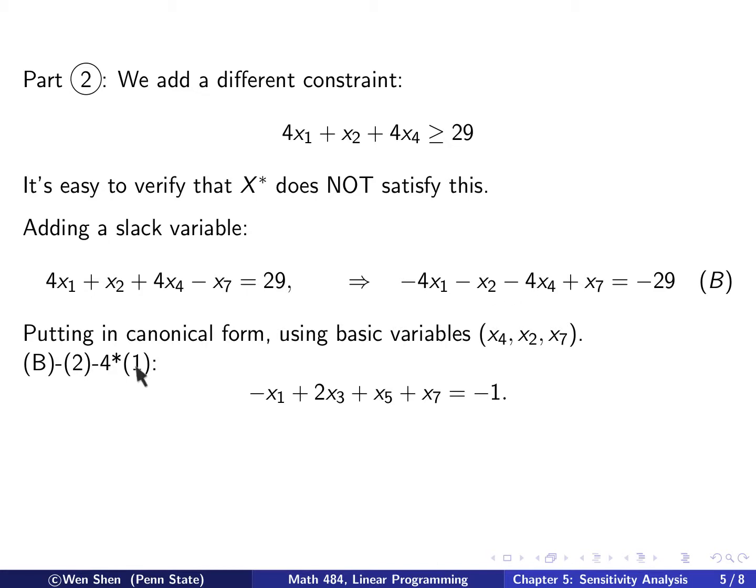I can take the second constraint, multiply by negative 1, add on top of B. And I take the first equation, multiply by negative 4, add on top of B. And then I get this one. So you can verify my computation by doing out of the detail of this computation.